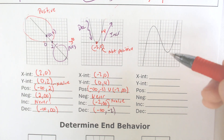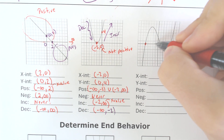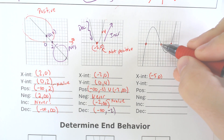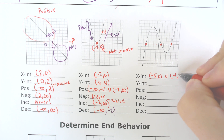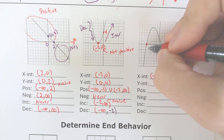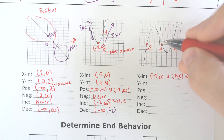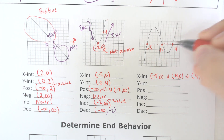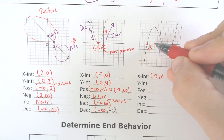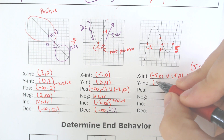Next, let's find the x and y-intercepts of this more complex graph. The x-intercepts are at (−5, 0), (1, 0), and (5, 0). The singular y-intercept is at 2, so that would be (0, 2).